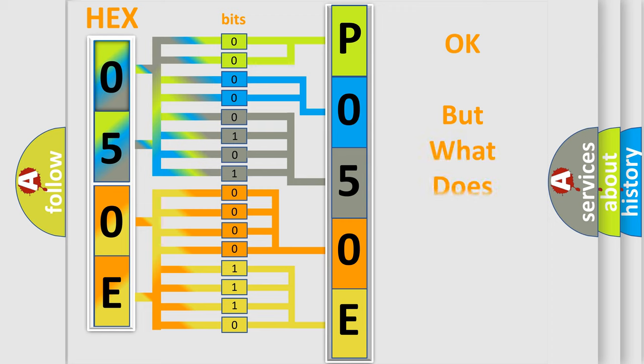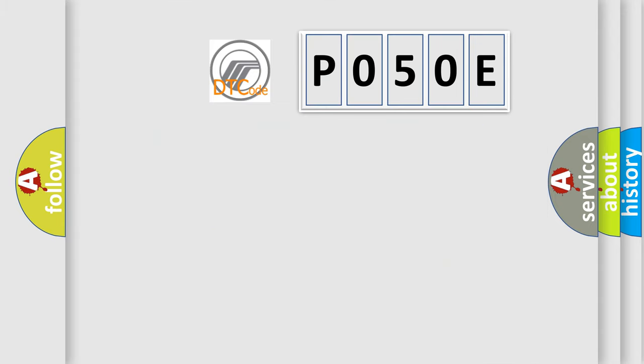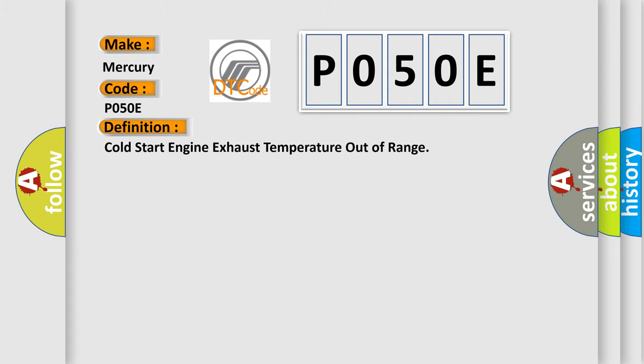The number itself does not make sense to us if we cannot assign information about what it actually expresses. So, what does the diagnostic trouble code P050E interpret specifically for Mercury car manufacturers? The basic definition is: cold start engine exhaust temperature out of range.